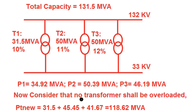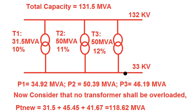Considering that no transformer shall be overloaded under parallel operation, the new usable capacity of the substation is 31.5 + 45.45 + 41.67 = 118.62 MVA. So out of a total installed capacity of 131.5 MVA, only 118.62 MVA can be utilized, because the transformers have different percentage impedances.